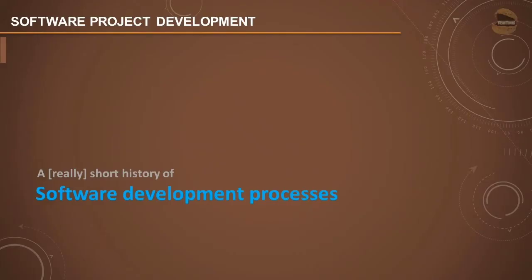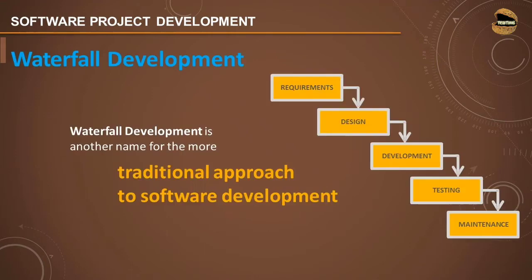When we talk about the history of the software development process, we are going to understand how exactly products were developed in earlier days using traditional approaches and how Agile is actually different compared to these traditional approaches. The very first and most proven development model in the market was the Waterfall model.